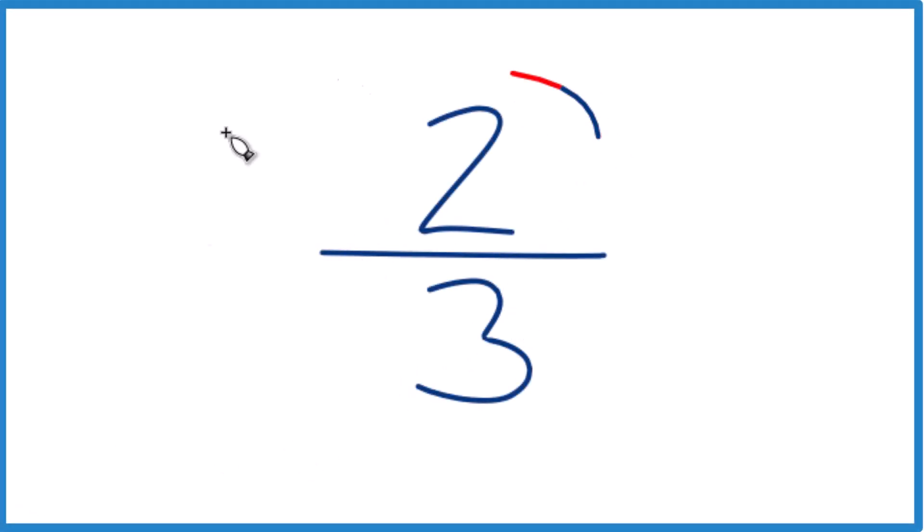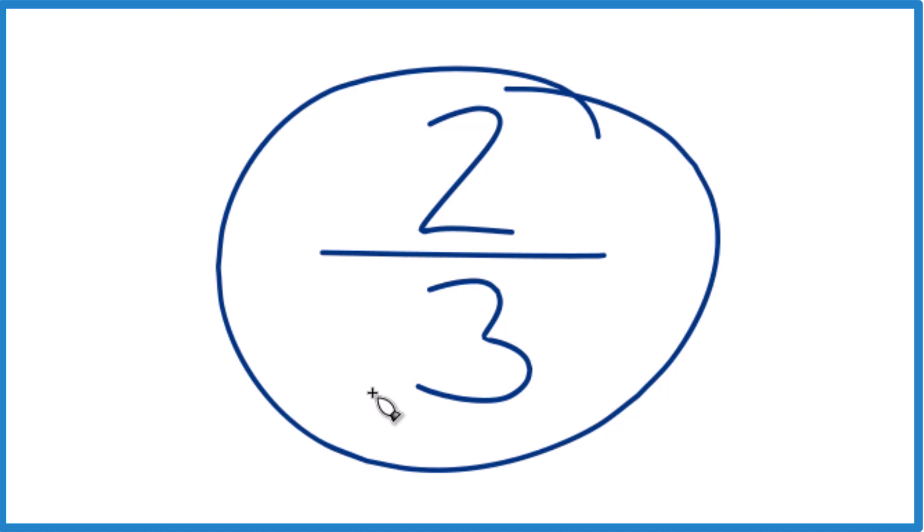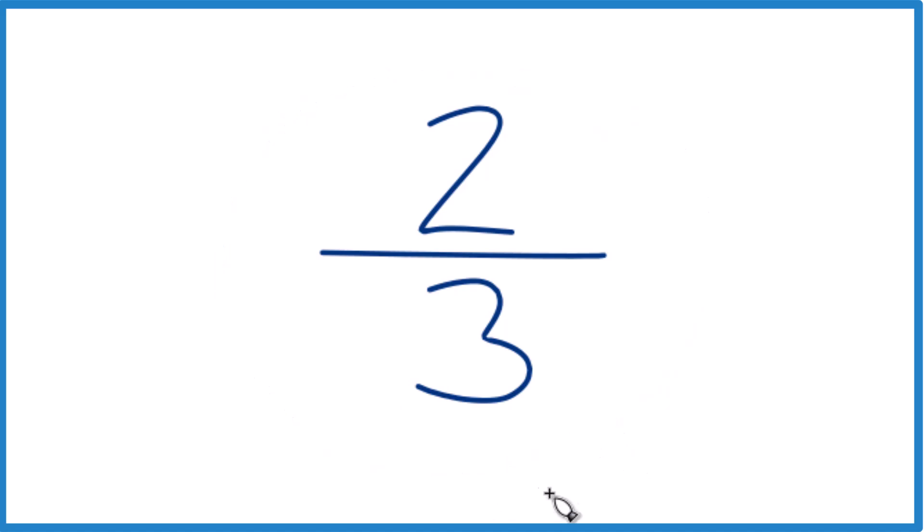Okay, so if you're given the fraction two-thirds and you want to get that to a decimal and round it to the thousandths, the hundredths, and the tenths place, I'll show you how to do that.